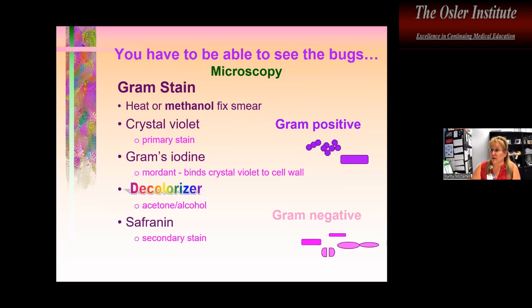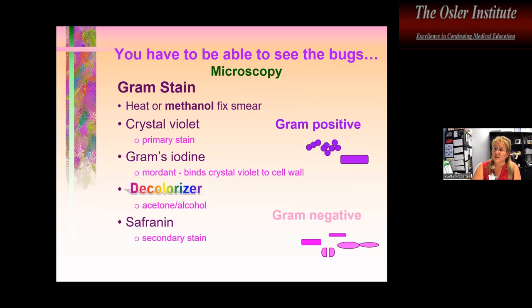The primary stain is crystal violet — the violet-blue stain. Gram-positive organisms, because of their thick cell wall, absorb this stain. Gram's iodine helps the crystal violet bind to the cell wall. Then we have the decolorizer, which is really the only place you can mess up a Gram stain. Acetone-alcohol — a 50/50 mix — is what to use: too much acetone and you decolorize too quickly; too much alcohol and you decolorize too slowly. Timing otherwise is not something to worry about.